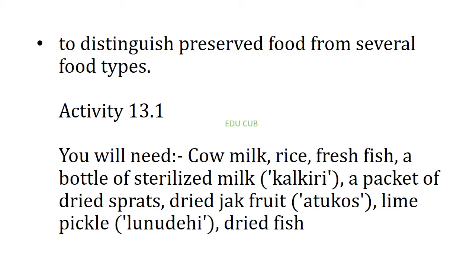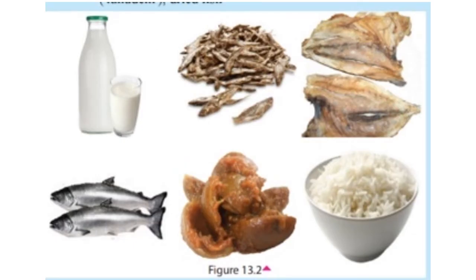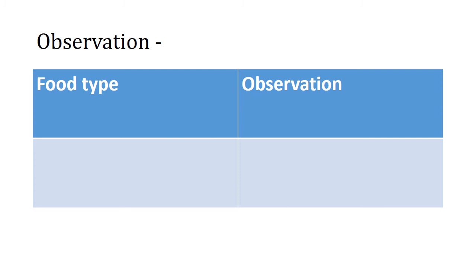In this lesson you have to do several activities. The first one is to distinguish preserved food from several food types. You will need: cow milk, rice, fresh fish, a bottle of sterilized milk, a packet of dried sprats, dried jackfruit, lime pickle, and dried fish. Keep samples of the food exposed to air and observe the color and texture every day for about a week. Tabulate your observations using a table with columns for food type and observation.